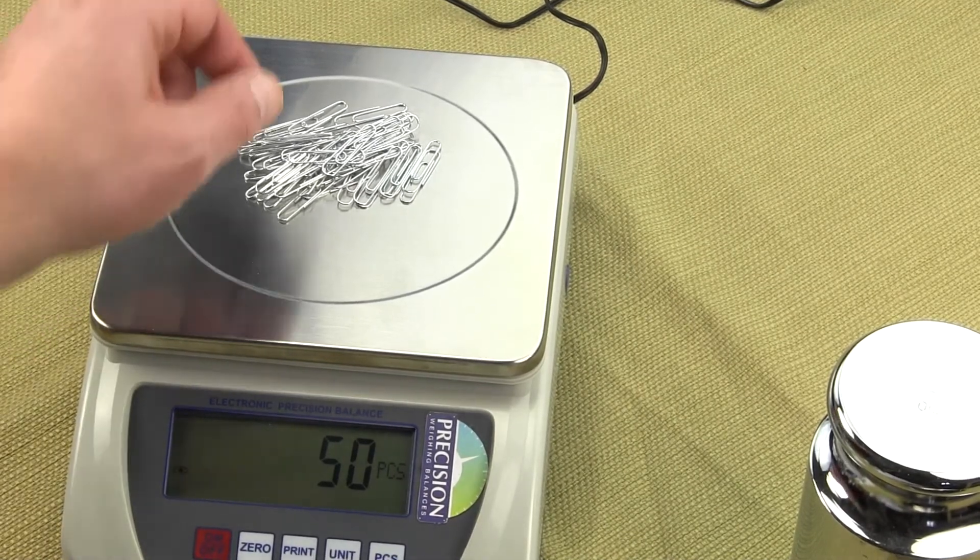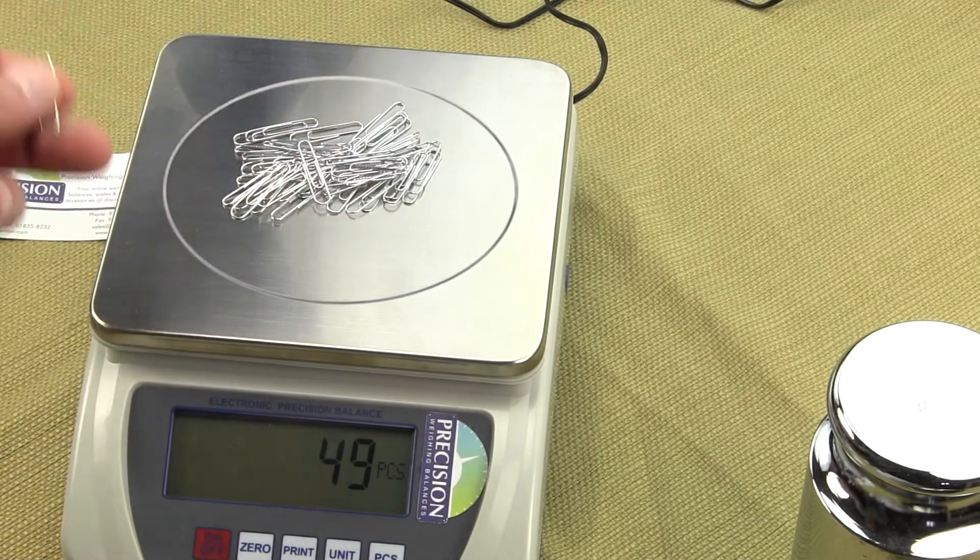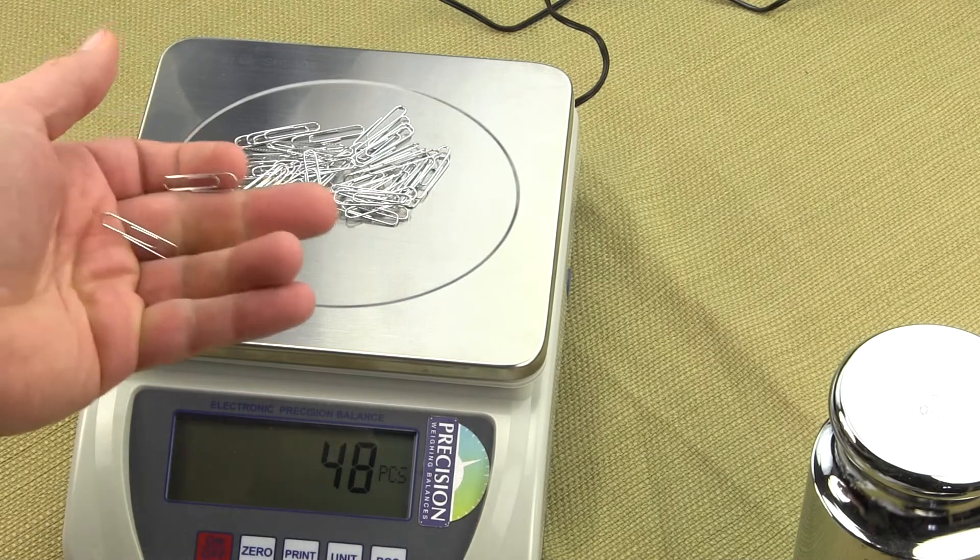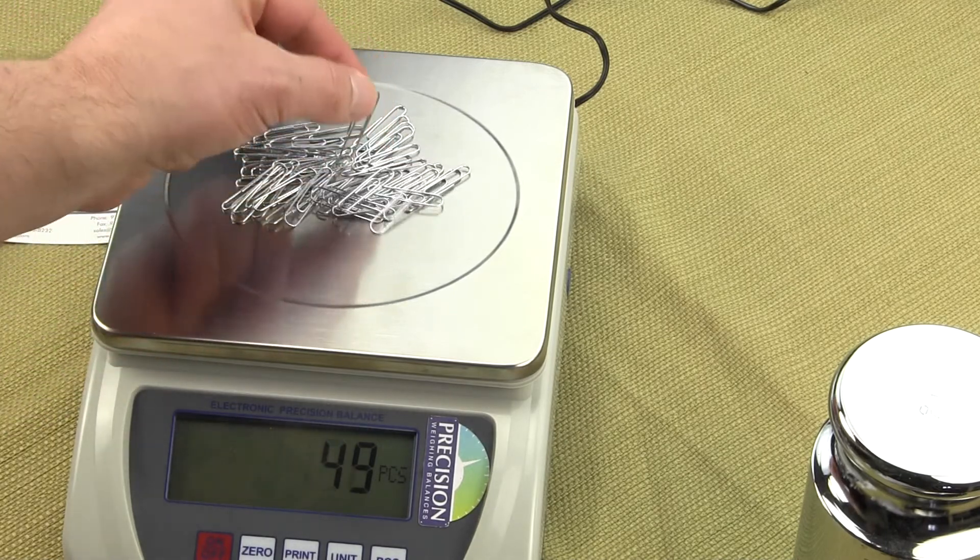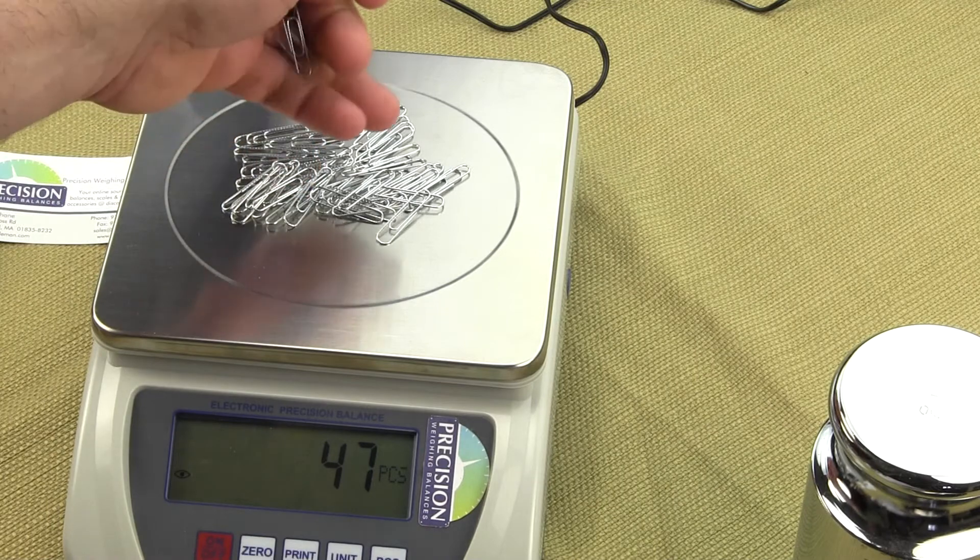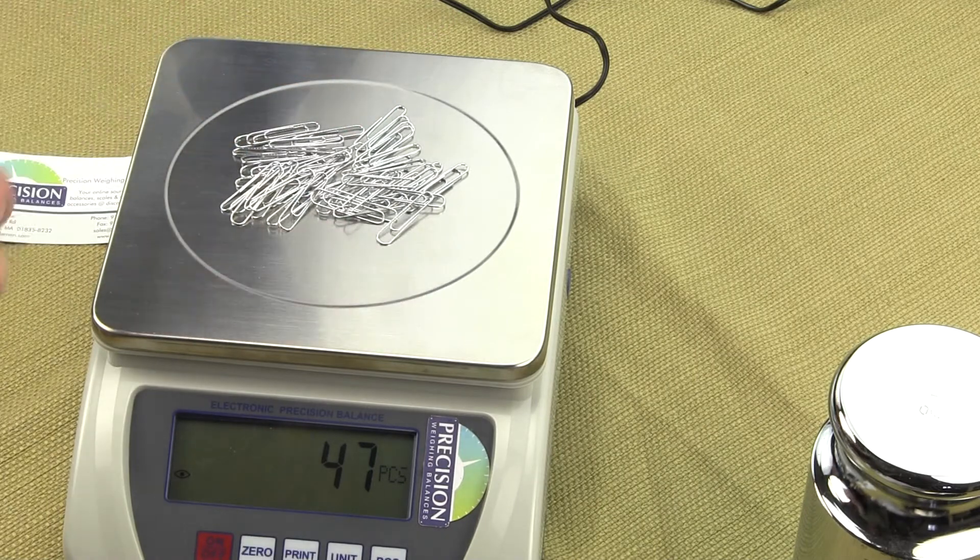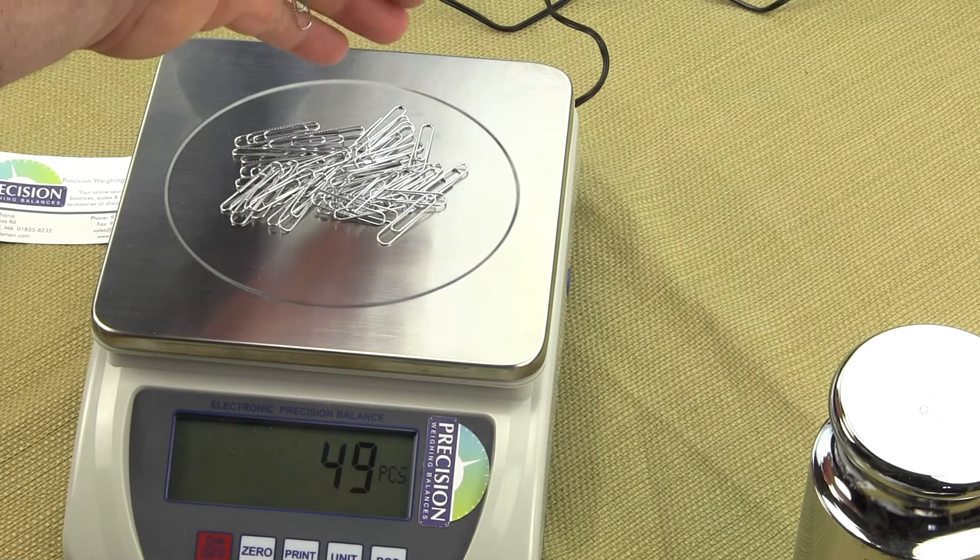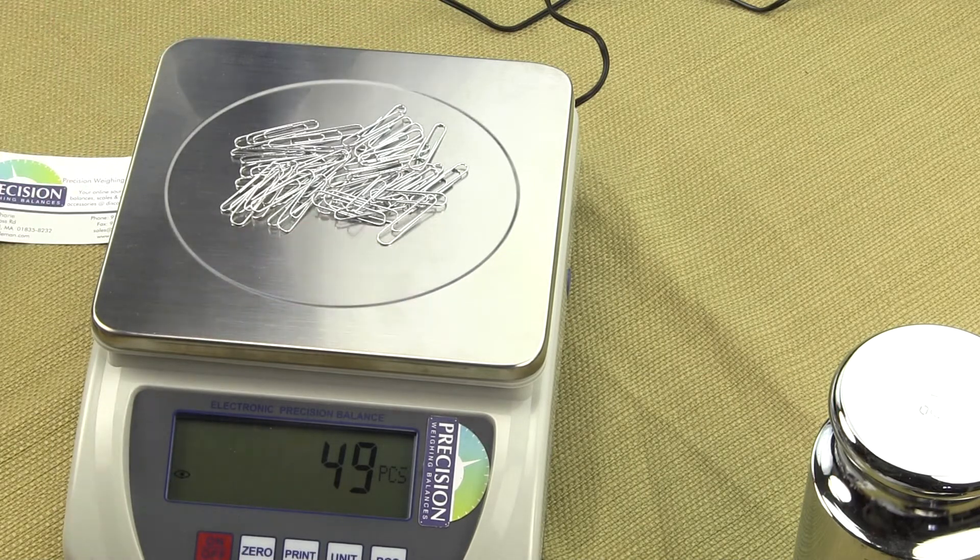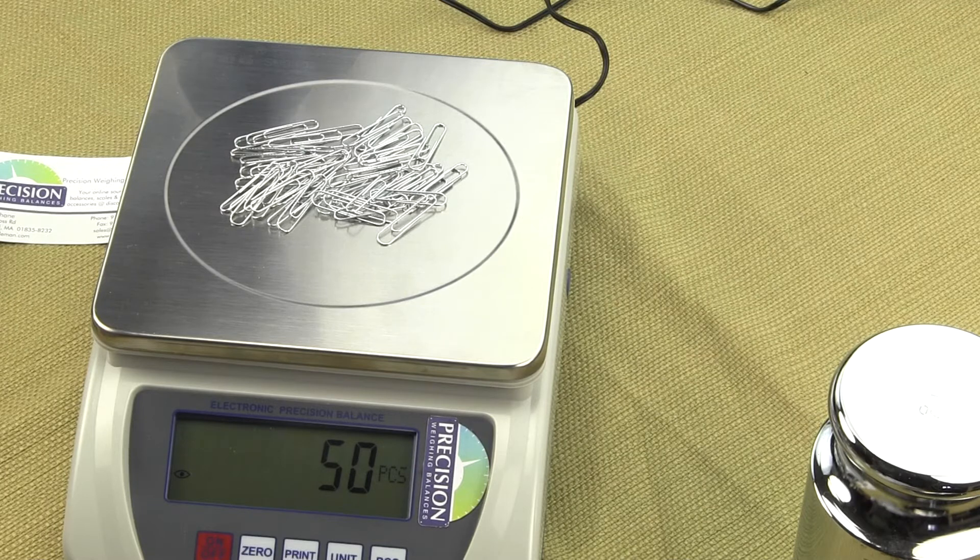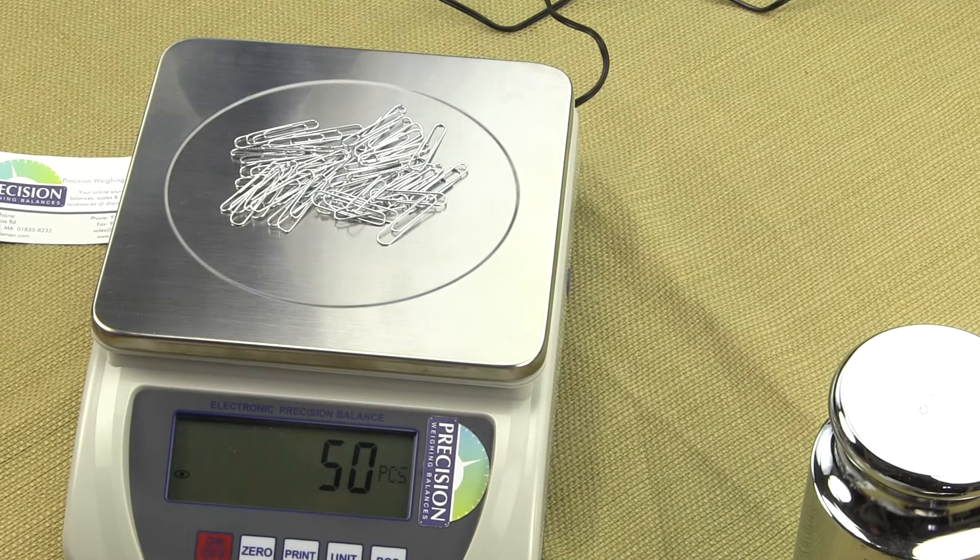You can see if we remove a part, there's one paper clip, another paper clip, another paper clip. The response is very fast. And if I drop a paper clip on, there's one, two, and there's a third one. This is the parts counting feature of the EPB10K.